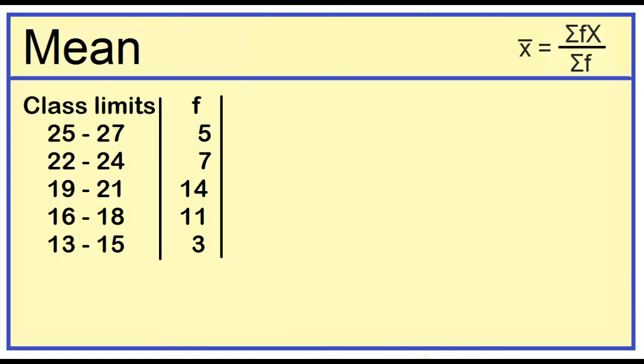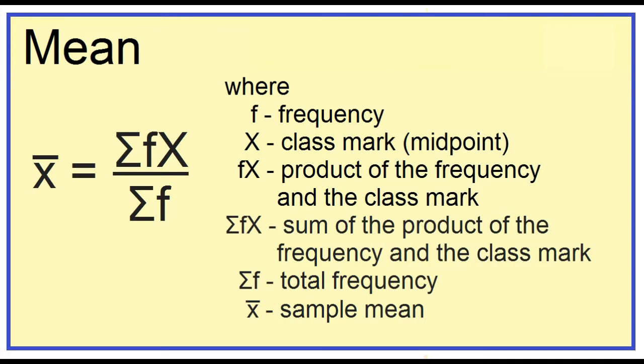Mean is equal to the sum of the product of the frequency and the class mark divided by the total frequency. Where f is the frequency, capital X is the class mark or the midpoint, fx is the product of the frequency and the class mark, summation of fx is the sum of those products, summation of f is the total frequency, and x-bar is the sample mean.